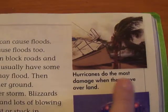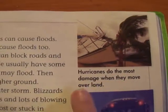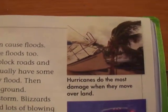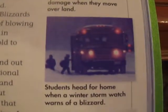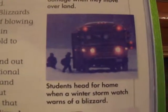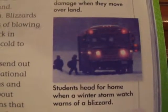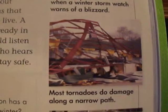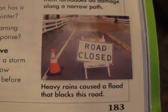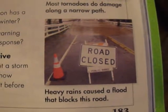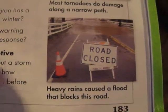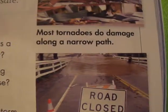Here's an example of hurricane damage — hurricanes do the most damage when they move over land. Remember, they start in the ocean. Here's a blizzard: students head for home when a winter storm watch warns of a blizzard. Most tornadoes do damage along a narrow path. And finally, heavy rains caused a flood that blocks this road — you can see the water on the road.